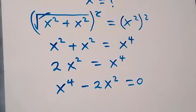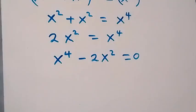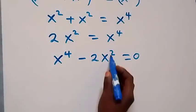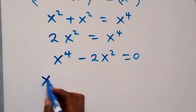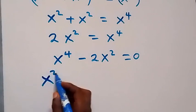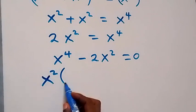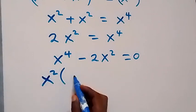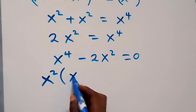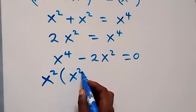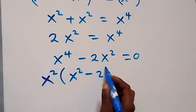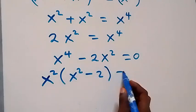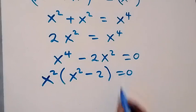We solve this by factoring x squared out, since x squared is common. This gives us x squared times the bracket (x squared minus 2) equals 0.